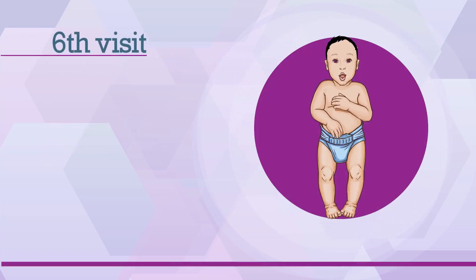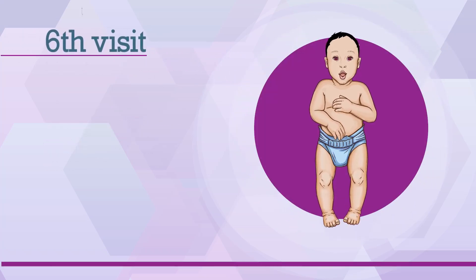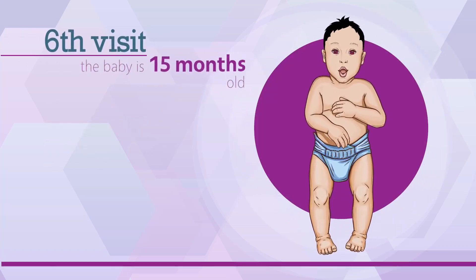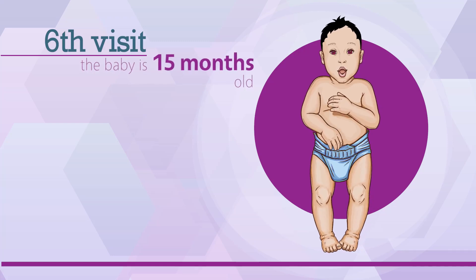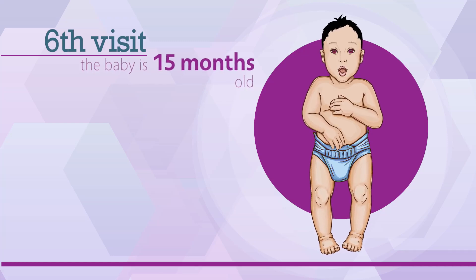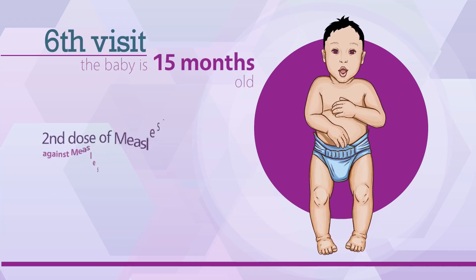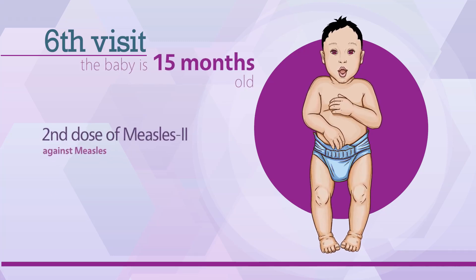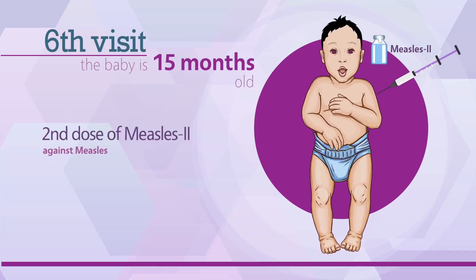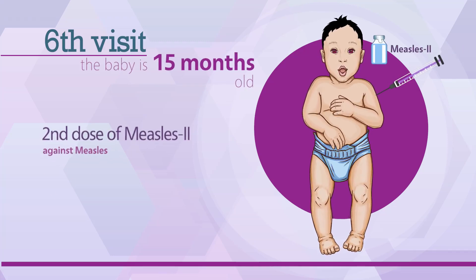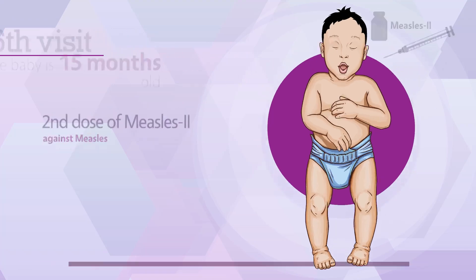The sixth visit is scheduled when the baby is 15 months old. On this visit, the second dose of Measles 2 vaccine is administered subcutaneously in the left arm for protection against measles.